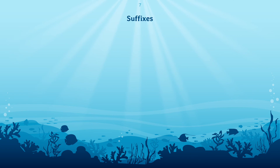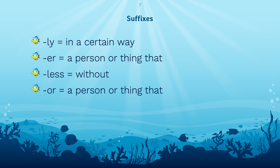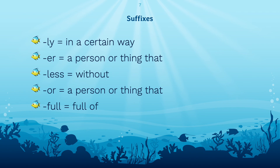Suffixes are word parts that are added to the back of a base word. They cannot stand on their own. When suffixes are added to a base word, it changes the meaning. The suffix -ly changes the base word to mean in a certain way. The suffix -er changes the word to mean a person or thing that. The suffix -less changes the word to mean without. The suffix -or changes the word to mean a person or thing that. And the suffix -ful changes the meaning to full of. There are many different types of suffixes — we just looked at five examples today. Remember, suffixes are a great way to help you determine the meaning of unknown words. Thank you everyone for watching.